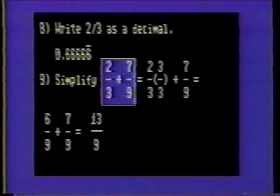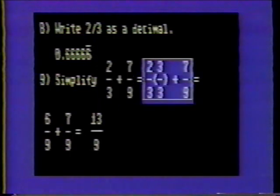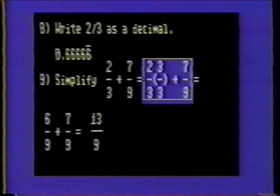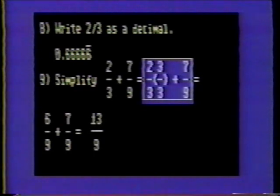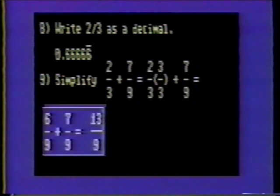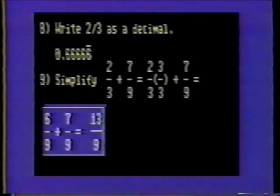Number nine: simplify the following problem — two-thirds plus seven-ninths. We must have a common denominator to add these numbers. Since three will divide nine evenly, let nine be the least common denominator. Multiply two-thirds by three over three to obtain six-ninths. Now the problem reads six-ninths plus seven-ninths, which is 13-ninths.